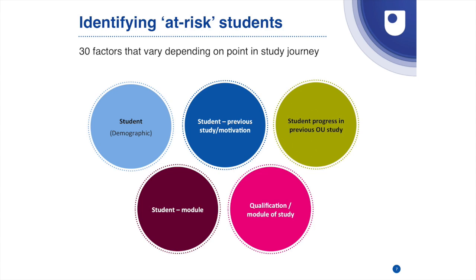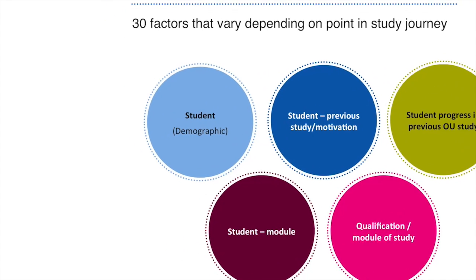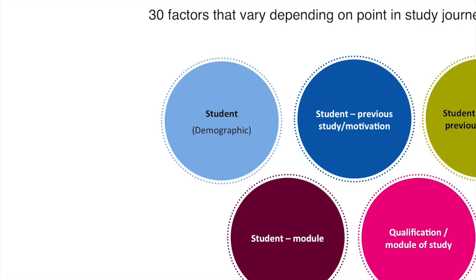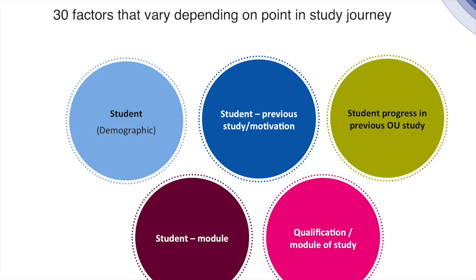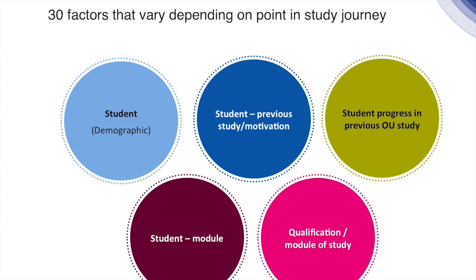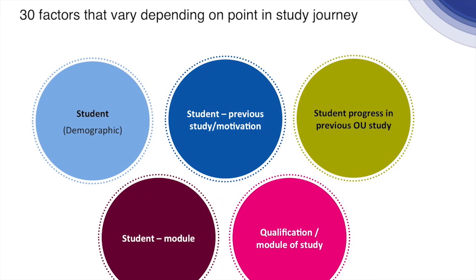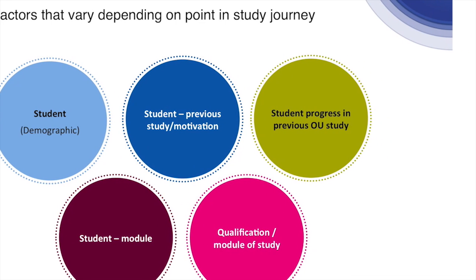A real cornerstone to the Open University's program around learning analytics is how we've gone about identifying at-risk students. Within the program we spent a lot of time very early on understanding just what the factors were that described our at-risk students. We need to look at demographics, and we've also discovered that previous motivation and study patterns is very important — if a student has studied with us before or has done prior study they're more likely to be successful.